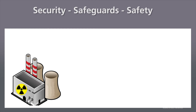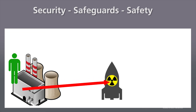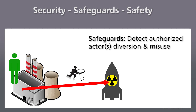Safeguards addresses a different situation, and that involves an authorized operator or perhaps the state itself in which the facility is located. That authorized actor, whether it's a state or some very high-level facility operator, will divert material to a non-peaceful military nuclear weapons program. The purpose of safeguards is to detect this diversion — not necessarily to prevent it, but to detect the diversion of material and the misuse of facilities for military purposes.